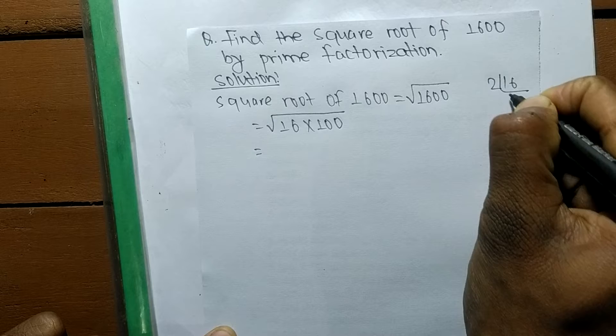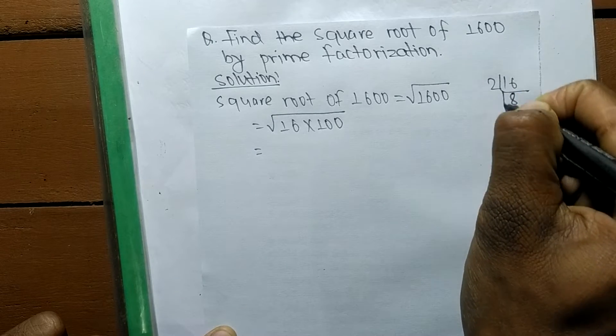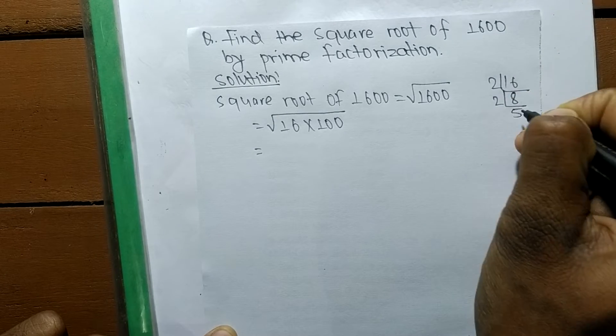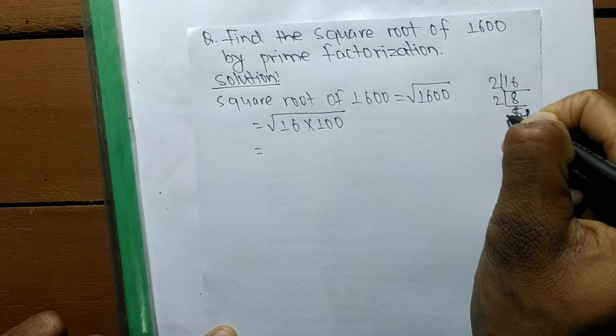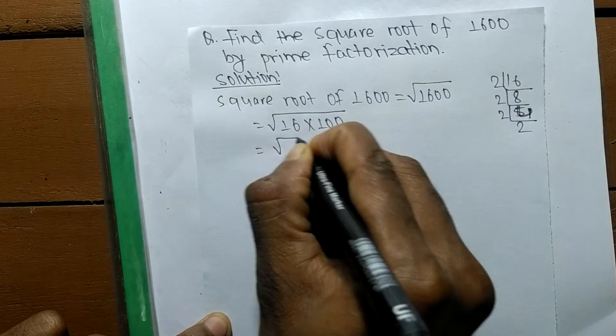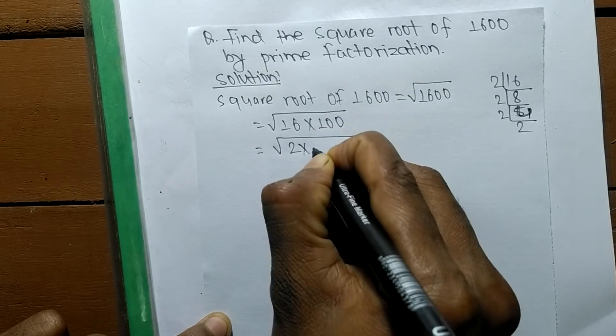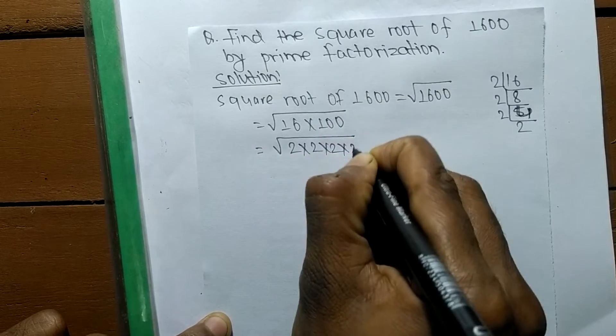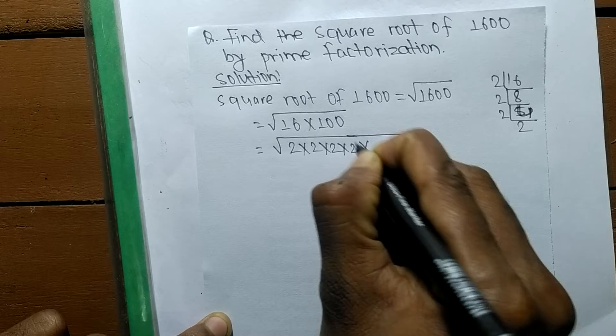2 times 4 means 8, and 2 times 2 means 4. So 16 means it is 2 times 2 times 2 times 2. Like 100, it is 10 times 10. We have got the prime factors of 16 and 100.